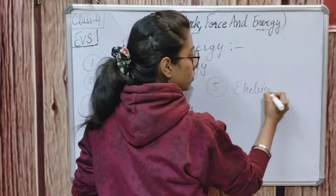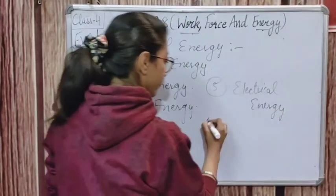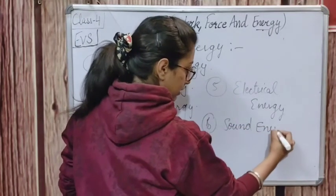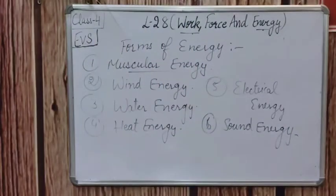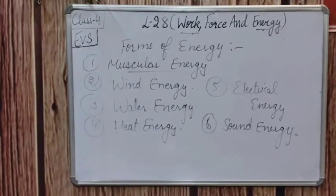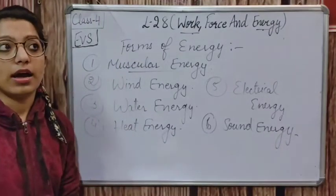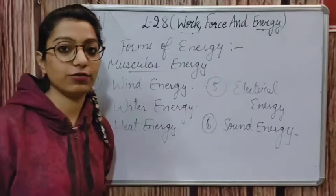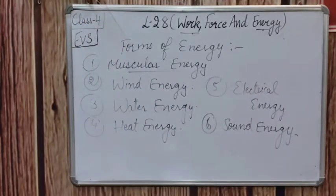Next is electrical energy. Electrical energy is the energy that we obtain from electricity. We use electrical energy to light electric bulbs and run different electric appliances. The energy we obtain from electricity is called electrical energy.